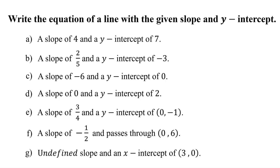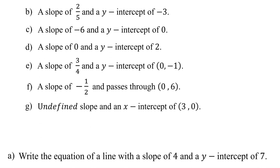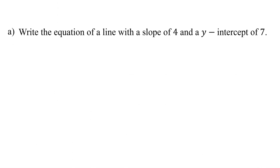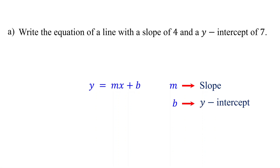In this lesson, you will learn how to write the equation of a line given its slope and y-intercept. The most straightforward form to use when given the slope and y-intercept is the slope-intercept form. In this form, m represents the slope and b represents the y-intercept.